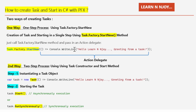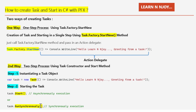The second way is a two-step process, utilizing the Task constructor and a start method. Step one: instantiate a Task object using the new operator — Task t = new Task — and pass in the action delegate as a lambda expression representing an anonymous function that takes no arguments and prints 'Hello, Learn & Enjoy — greetings from a task' to the console. Step two: start the task. We have two options — the Start method, which executes the task asynchronously, and the RunSynchronously method, which executes the task synchronously. Both methods start the task, but one executes asynchronously and the other synchronously.